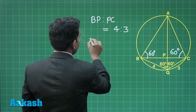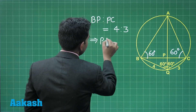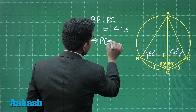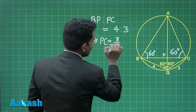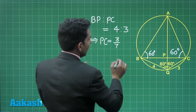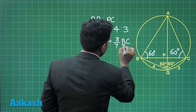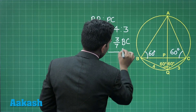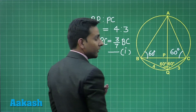So we can write the length of PC is equal to 3 upon 7 times the length of line segment BC. Let us mark this as equation number 1.